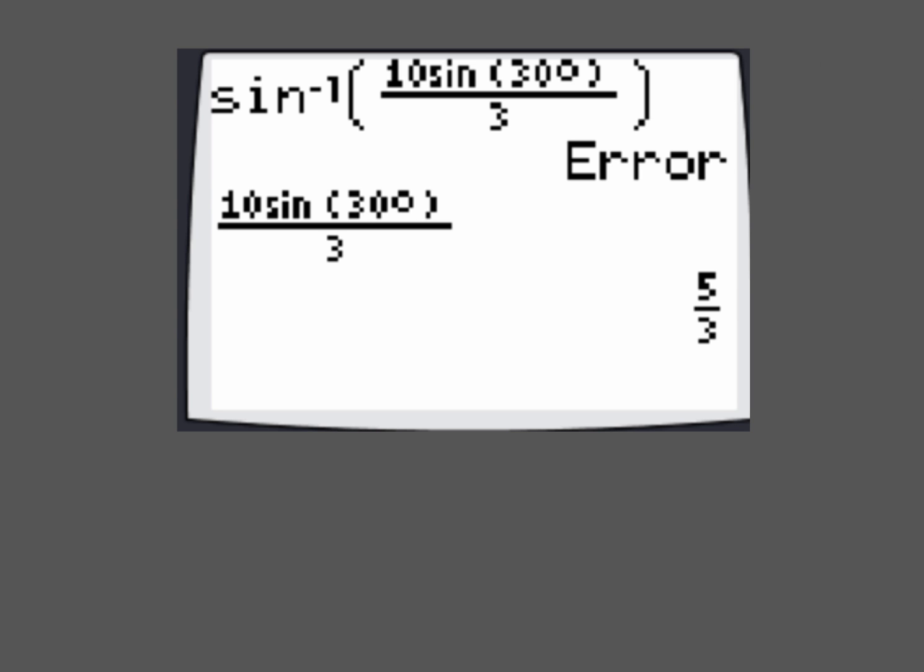And that's because, remember, this blop piece, that whole part that's in here, this 10 sine 30 degrees, all of that, that's got to be between negative 1 and 1. And if we take a look at our domain restriction here for that, knowing that it's between negative 1 and 1, well this 5 thirds, that's definitely bigger than 1 because that would end up being a decimal of 1.6 and repeating forever. So that's outside of our domain restriction.